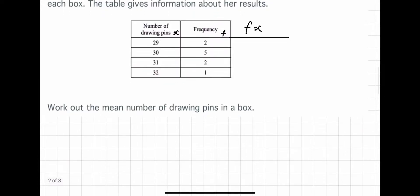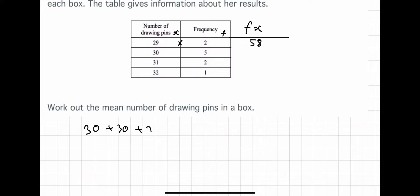We know 29 drawing pins occurs twice, so instead of writing 29 plus 29, we write 29 times 2, which gives 58. The 30 listed five times becomes 30 times 5, which gives 150. Then 31 times 2 gives 62, instead of writing 31 plus 31. And 32 only appears once, so it's just 32.